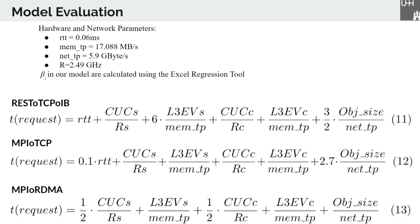Now we want to evaluate our model. The hardware and network parameters are provided by the Mistral configuration and are displayed here above. And we use a regression analysis tool to calculate the betas. The exact calculation can be found in our paper. We end up with the following equations for the different protocols. As you can see, the latency of MPI, native MPI or MPI over RDMA, is expected to be better than the others. REST and MPI over TCP show otherwise similar performance characteristics. We note here that if beta_5 is above 1, it's an indicator that we cannot achieve the full network throughput.